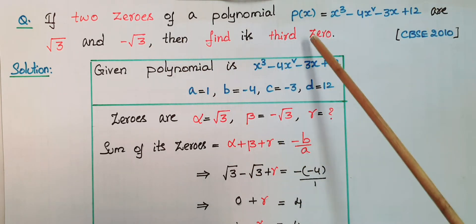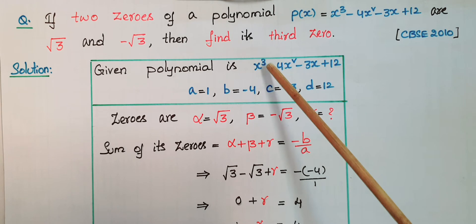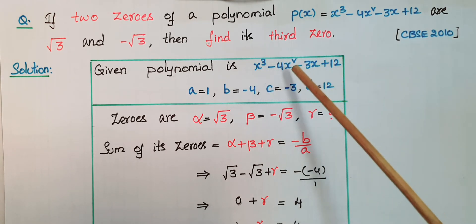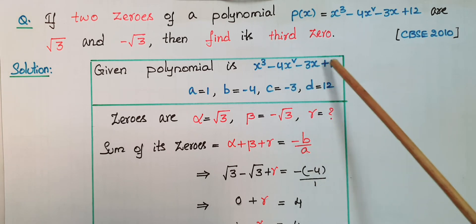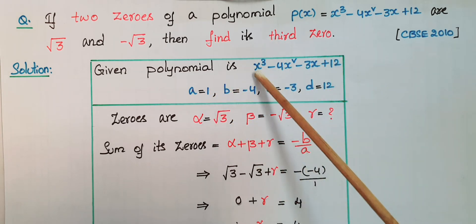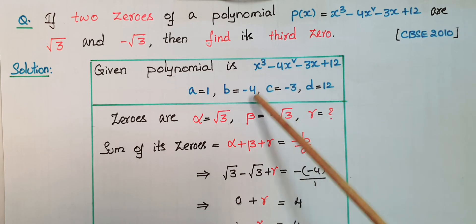The given polynomial is x³ - 4x² - 3x + 12. It is in the form ax³ + bx² + cx + d, so a = 1, b = -4, c = -3, and d = 12.